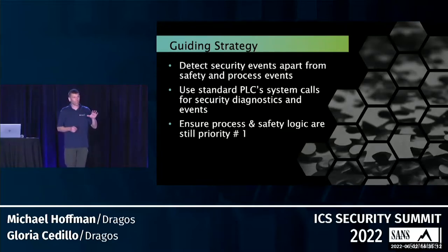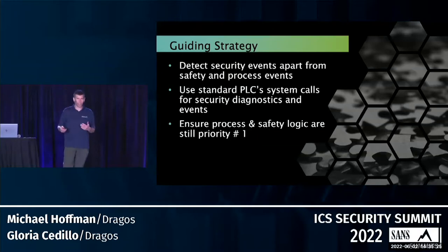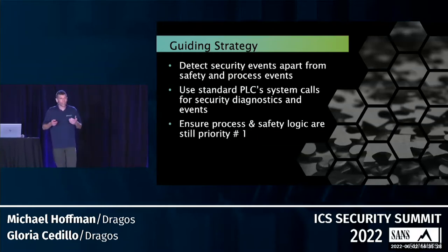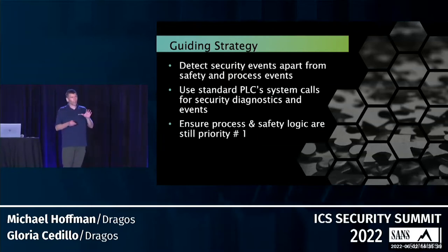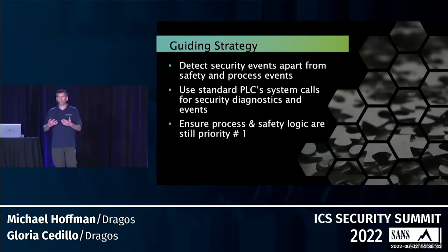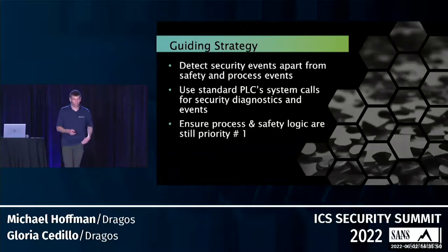The guiding strategy has three key things: leveraging security and detecting security events, but doing it apart from process and safety. Security is extremely important, but just as important is making sure you're detecting process events and safety events separately. Another guiding strategy is using inbuilt capabilities within the device — standard built-in capabilities and standard system calls, like within Rockwell's 'get system value' and those kind of things. Also ensuring that even though we want to add security capability, we're not taxing the device so it can't do its main function, which is process and safety.